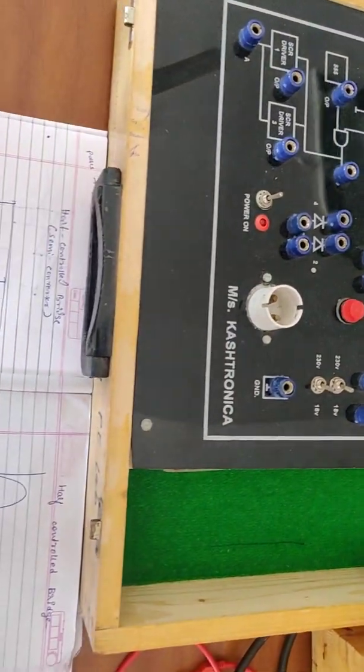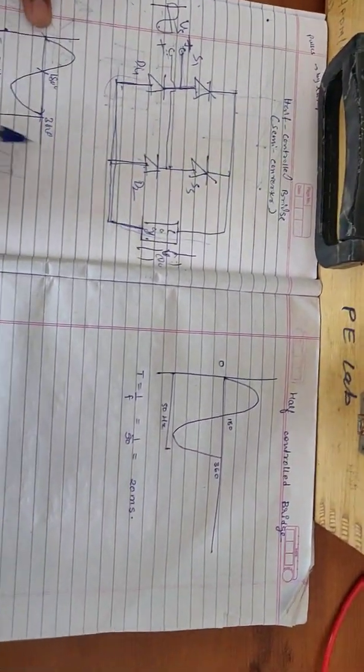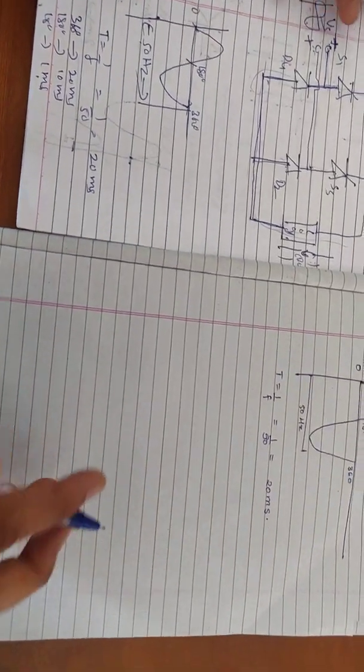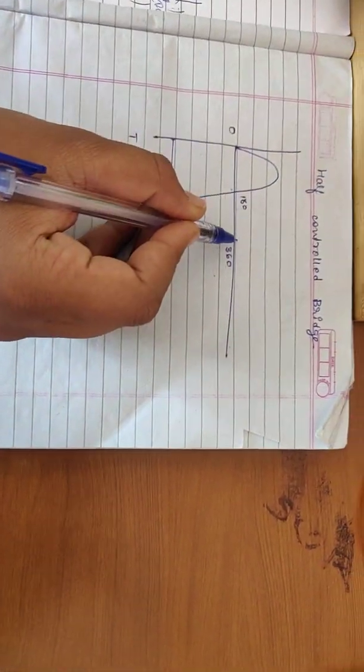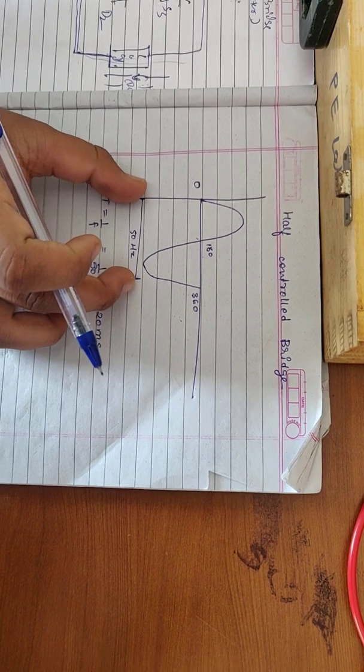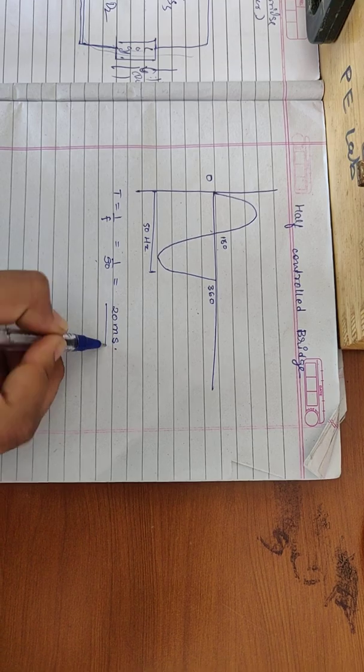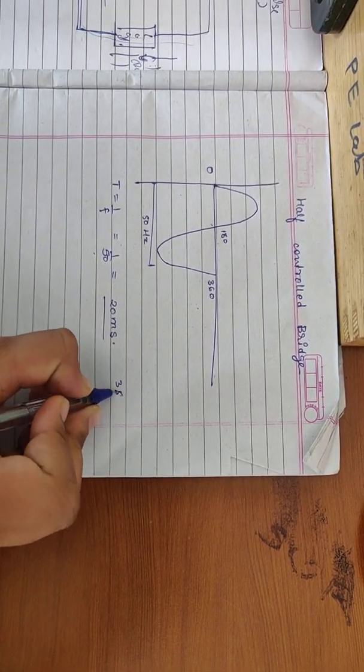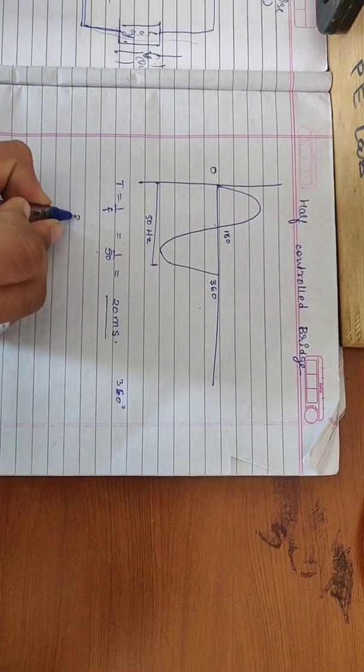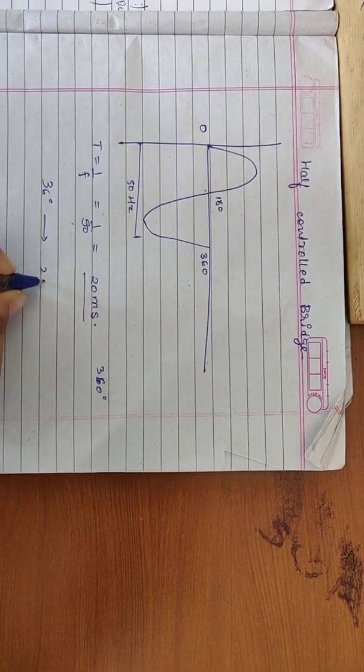Now when we are giving the pulses in a sine wave we have 0 degree, 180 degree and 360 degrees which has the frequency of 50 hertz. So time is given by 1 by F which is 1 by 50 so 20 milliseconds is corresponding to 360 degrees.